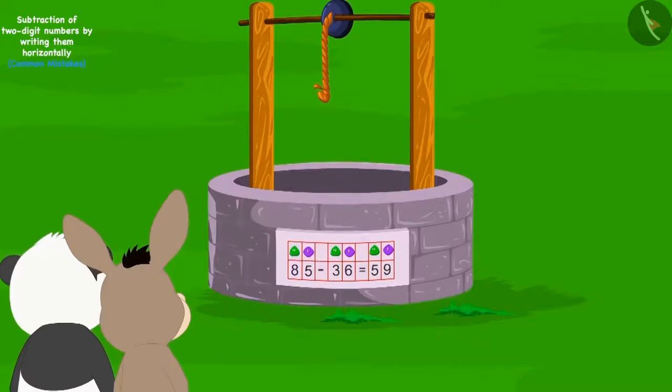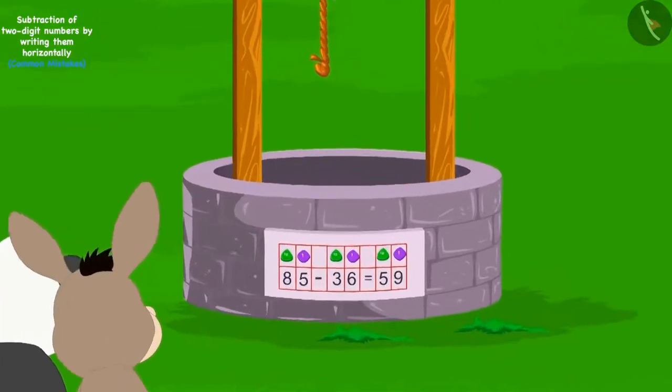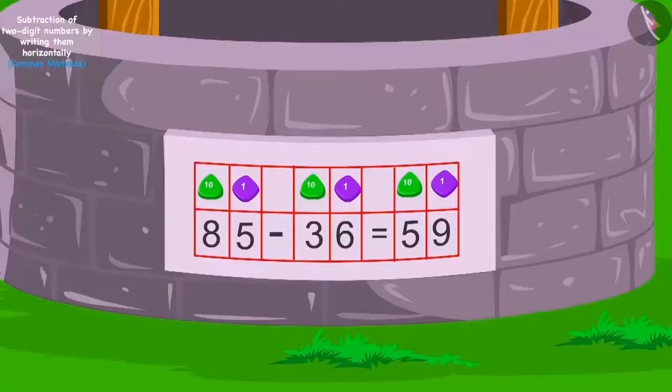Now, Bola and Golupanda saw a well. This puzzle was written on the well. Children, is this subtraction correct? Yes! There is a mistake in this subtraction. Can you identify the mistake here?